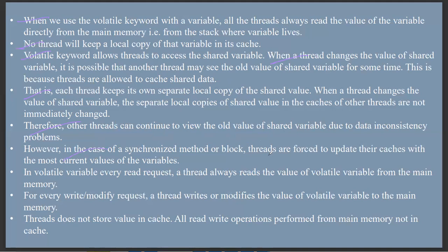However, in the case of synchronized method or block, threads are forced to update their cache with the most current value of the variable. Since synchronized is a method or block, the threads are forced to use the current value. The volatile variable requires every thread to always read the value of a volatile variable from the main memory. In a normal variable, for example an integer, it takes data from the shared variable. But in a volatile variable, it takes the value directly from the main memory.